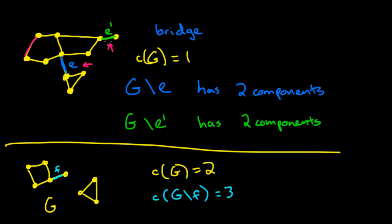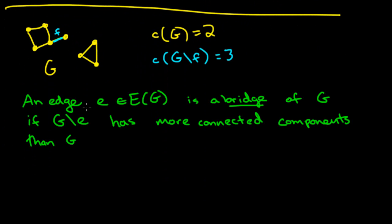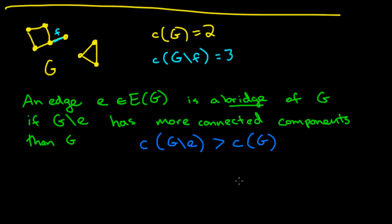So a connected graph would become disconnected if you remove a bridge edge, and a graph that is already disconnected with some number of connected components will increase in the number of connected components if you remove a bridge edge. So now let's officially define what we mean by a bridge: an edge E of a graph is a bridge if removing that edge creates more connected components than were in the original graph. In other words, the number of connected components of G without edge E is more than the number of connected components of G.